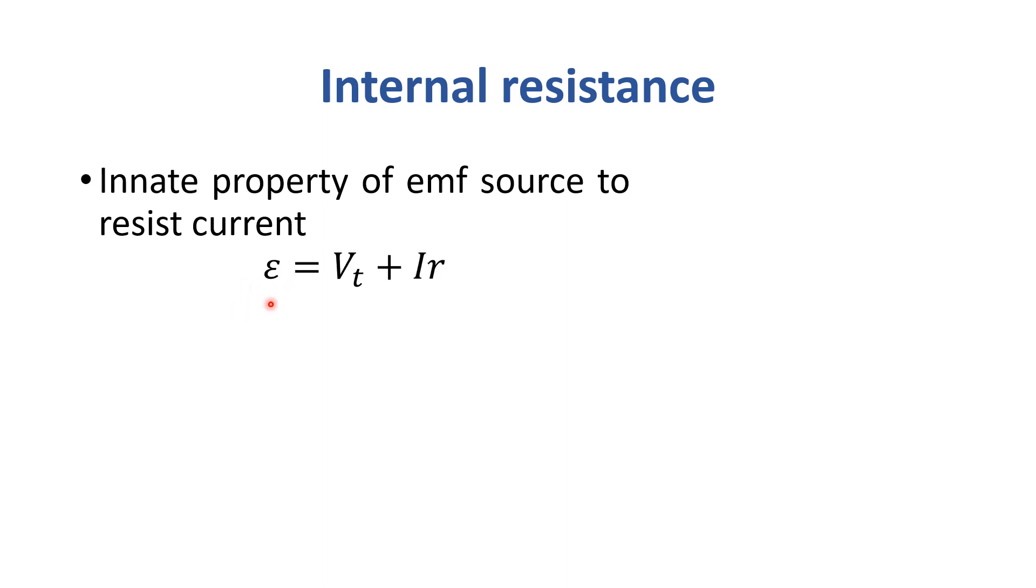ε equals Vt plus Ir, where small r is internal resistance. ε denotes EMF, Vt is the terminal potential difference, I is the current, and r is the internal resistance. This shows that due to internal resistance, Vt is less than EMF - the terminal potential difference becomes less due to internal resistance.